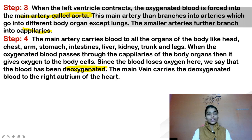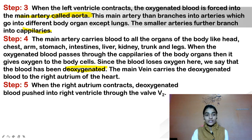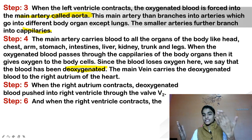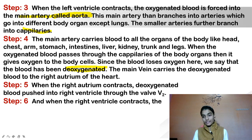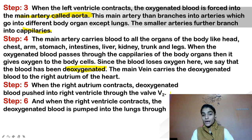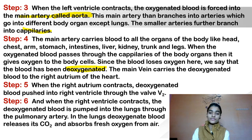Once the blood loses oxygen, we say it has been de-oxygenated. This de-oxygenated blood is then collected back. When the right atrium contracts, the de-oxygenated blood is pushed into the right ventricle through a valve. When the right ventricle contracts, the de-oxygenated blood is pumped into the lungs through the pulmonary artery.